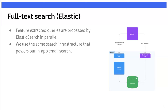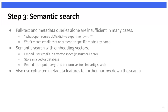Once we have the features, we turn them into Elasticsearch queries and fire away at our Elasticsearch cluster. At Shortwave we've been using Elasticsearch for years — it powers our email search functionality. We use the same infrastructure to serve these queries. Things like date range, keywords, and other features turn into sub-queries executed in parallel on our Elasticsearch cluster. However, full-text search and metadata queries alone are not always enough. Sometimes you need to go deeper — for example, a question like "What open-source LLM did we experiment with?" won't necessarily be answered by keyword search if the emails only reference model names like Mistral or Zephyr without explicitly using the term "open source."